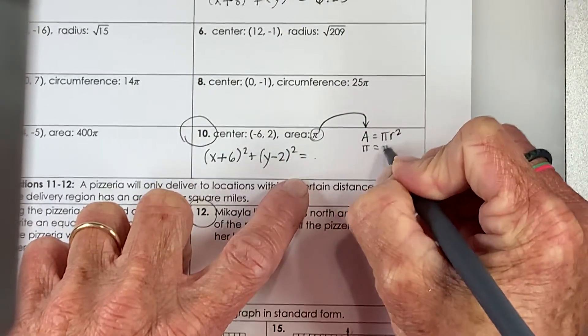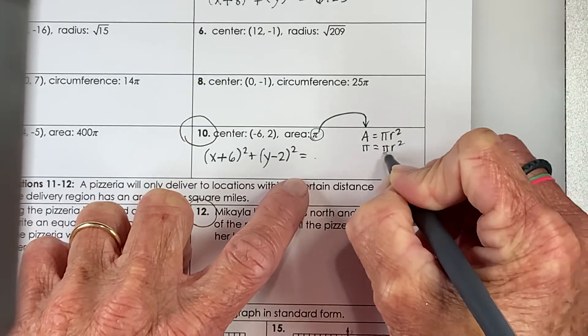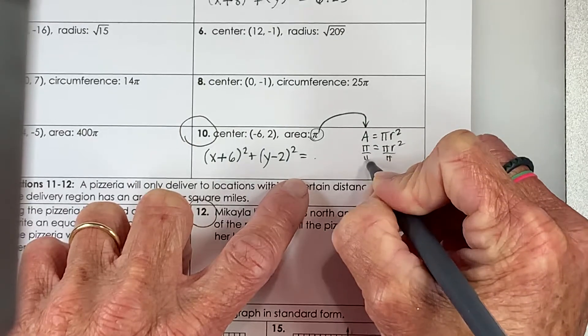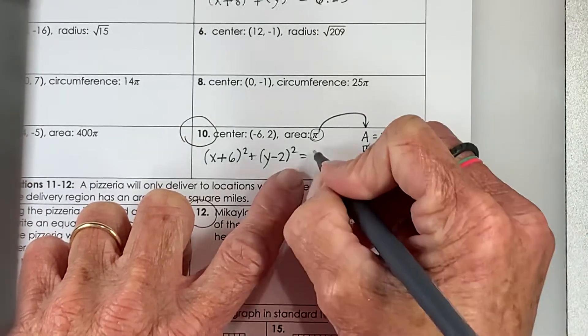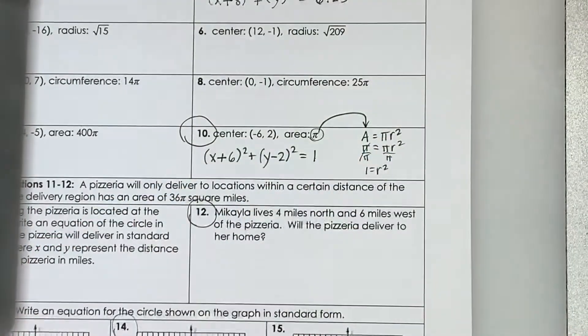And I have the area. So I'm going to replace a with pi. Pi is equal to pi r squared. So when we divide away the pi's, you get that 1 is equal to the radius squared. So the radius is 1, but we're going to square it when we plug it in. It's still 1.